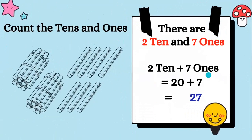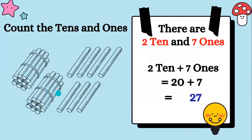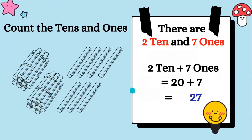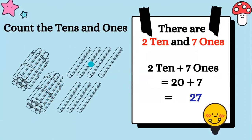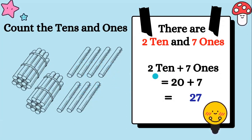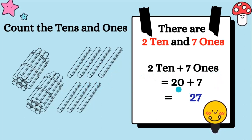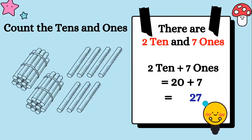Let's try one more. Count the tens and ones. There are two tens and seven ones — one, two, three, four, five, six, and seven. Two tens and seven ones means twenty plus seven, which is twenty-seven.